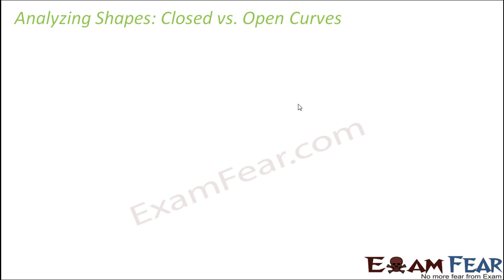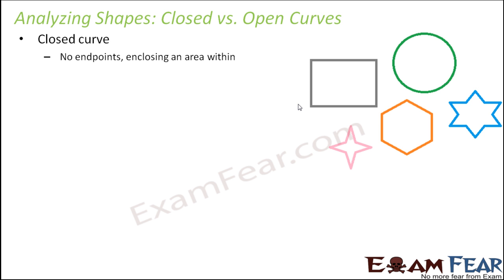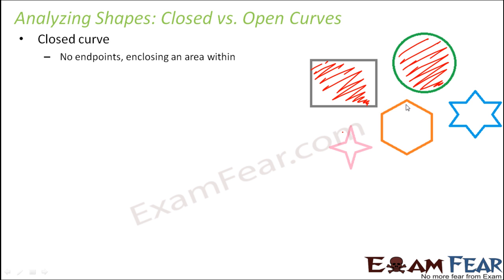Analyzing these shapes, we have concluded that curves can be of two types: it can either be a closed curve or it can be an open curve. A closed curve is one which has no end points — basically, it encloses an area within it. Looking at these images, you see that there is no concept of start point and end point. There is some area enclosed within it. These shapes form a boundary and enclose the entire region within that boundary. So these are called closed curves.